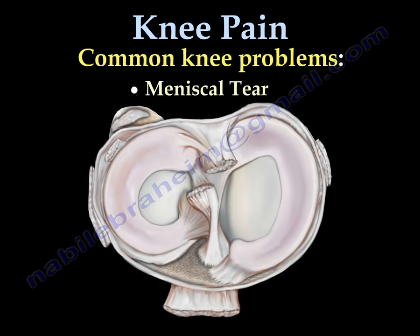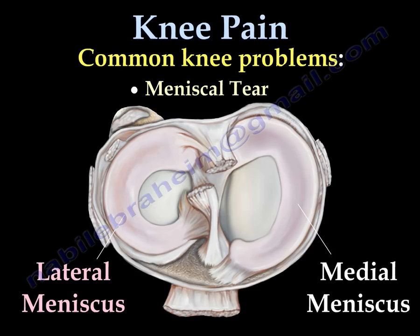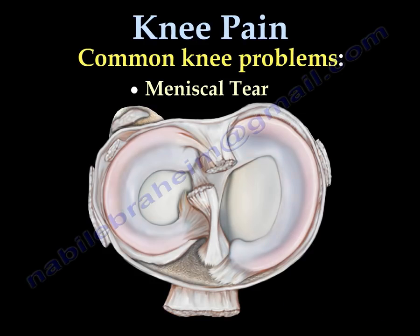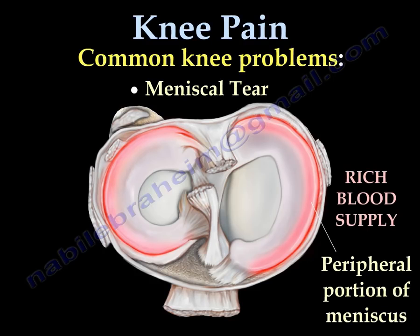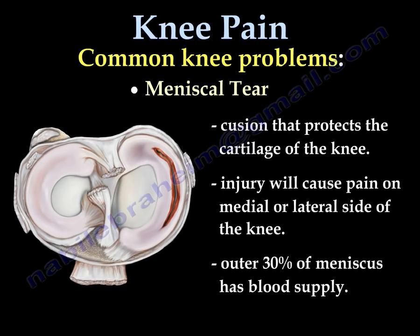Meniscal Tear. The medial and lateral menisci serve as cushions that protect the cartilage of the knee. The inner part of the meniscus lacks blood supply and cannot heal by itself. The outer area of the meniscus is rich in blood supply; if there is a peripheral tear in this area and it is sutured, it can heal.